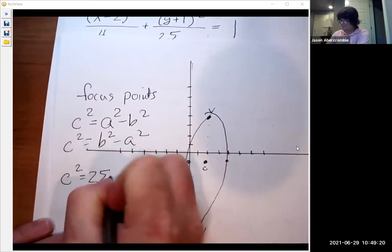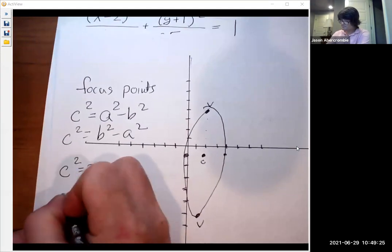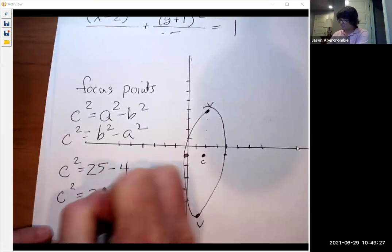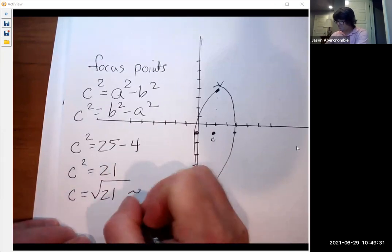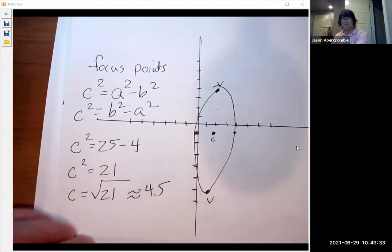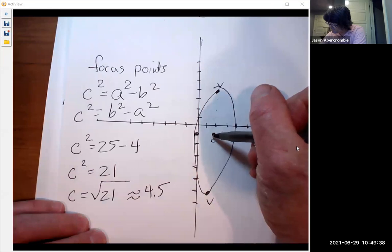For us, C squared is going to be 25 minus four. C squared equals 21. So C is the square root of 21. And I'm going to just say that's about four and a half. So we're going to go up four and a half and down four and a half.